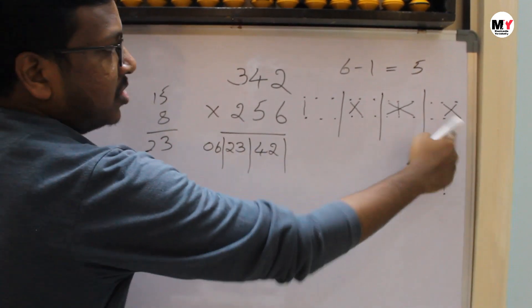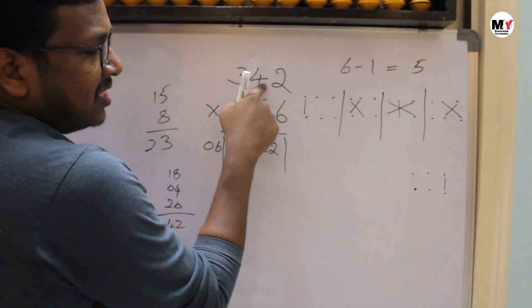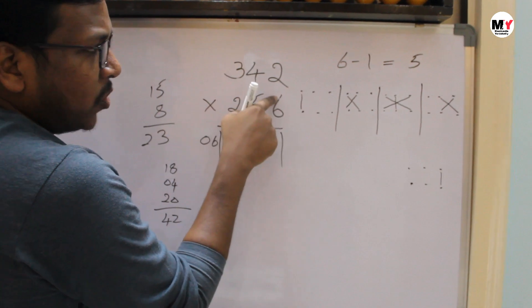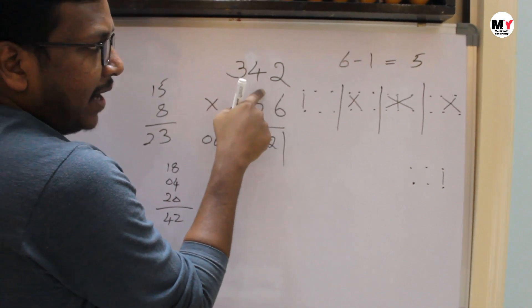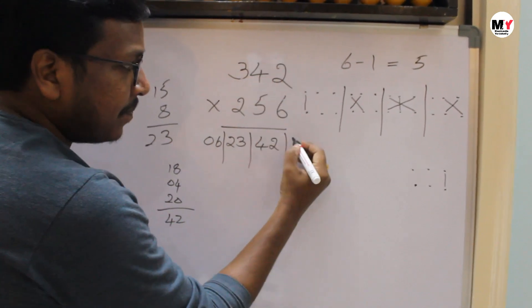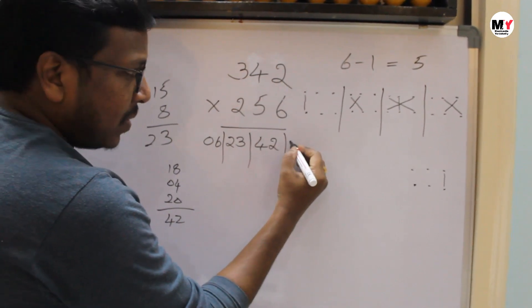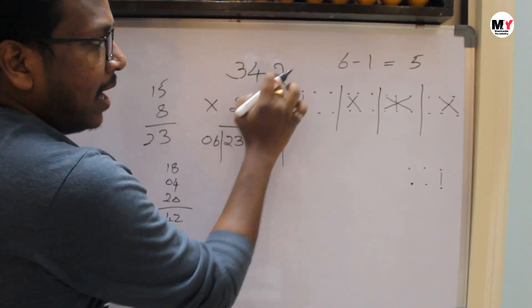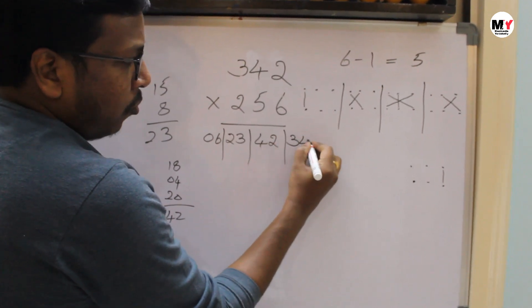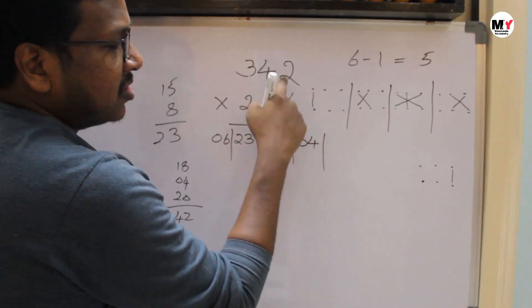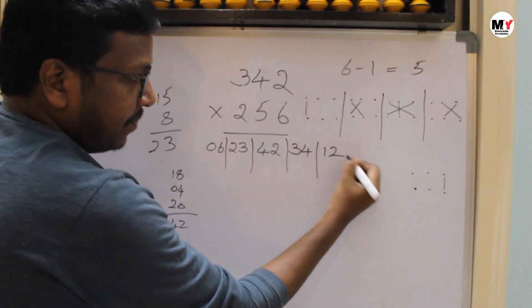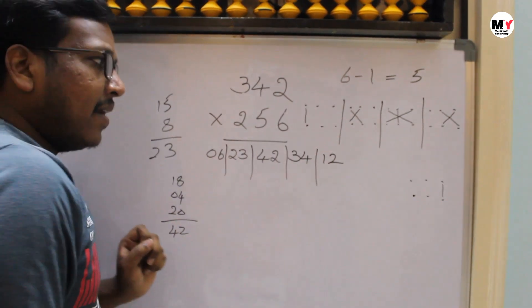Then the fourth step — the last two digits, multiply vertically: 4 times 6 is 24, and 5 times 2 is 10. 24 plus 10 is 34. And then the last step — the last digits: 6 times 2 is 12.